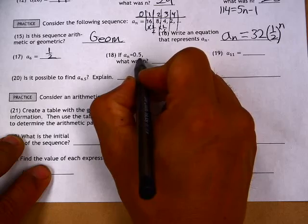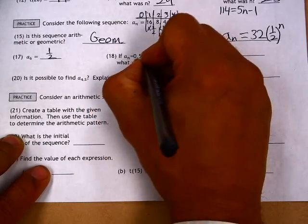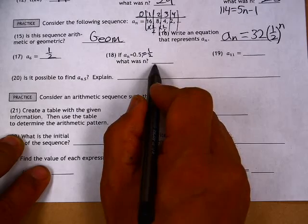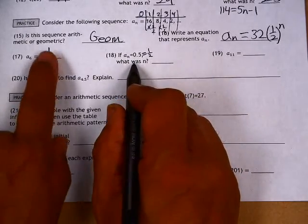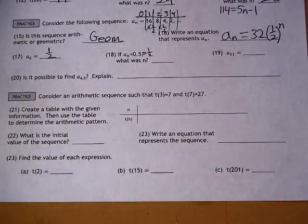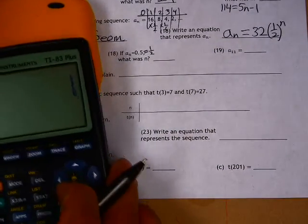If a of n is equal to 0.5, that's the same fraction as one half. What was n? The best way to do this one, if it wasn't obvious that it was 6, is to plug and chug. So I want a value of one half.